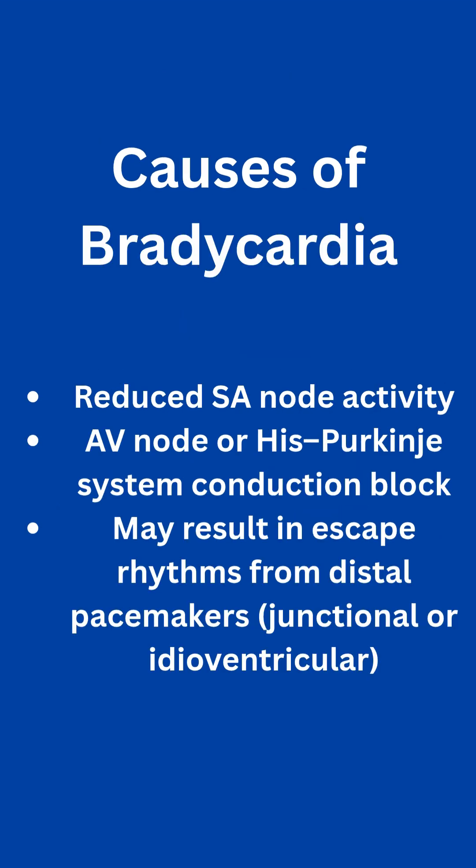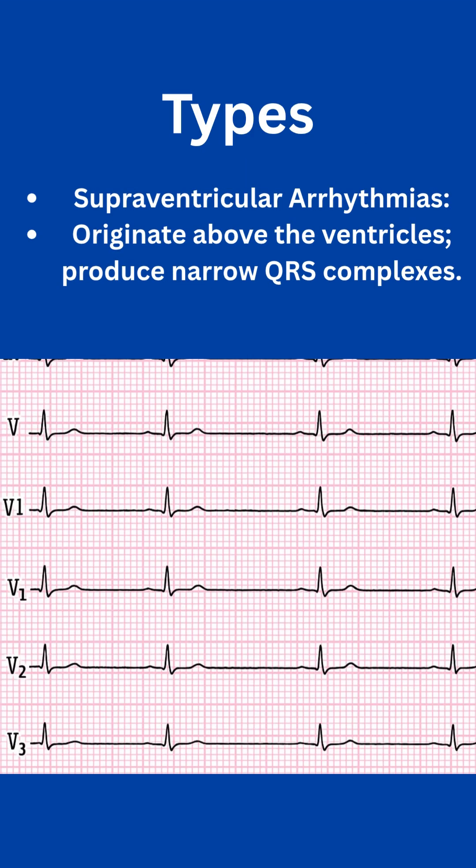Bradycardia happens when the SA node slows down, or when signals can't pass through the AV node or His-Purkinje system. When this occurs, the heart has a backup plan: escape rhythms take over. Junctional escape rhythms come from the AV node — slower, but still effective. Idioventricular rhythms arise from the ventricles: very slow, and often not sustainable for long.